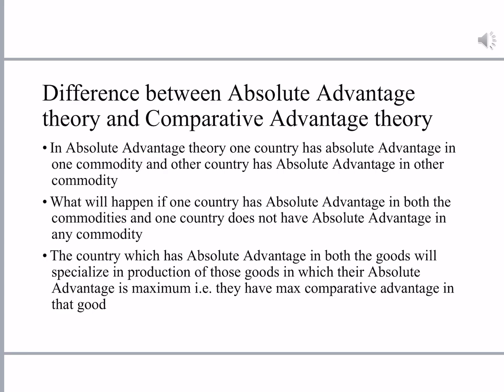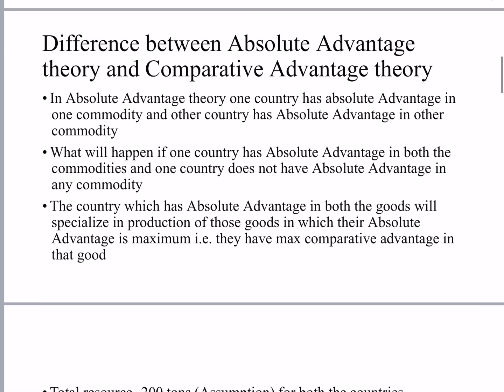As per the comparative advantage theory, both countries can still benefit from trade if they look at their comparative advantage or disadvantage. The country which has absolute advantage in both goods should specialize in the commodity where its comparative advantage is maximum. The other country will specialize in the good where its comparative disadvantage is minimum.